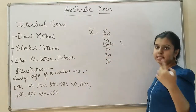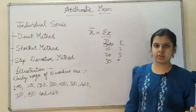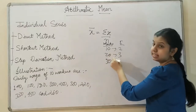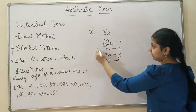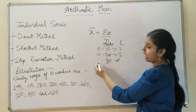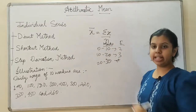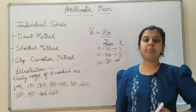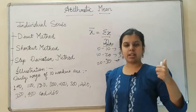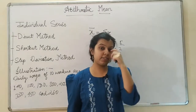In a discrete series, marks have a corresponding frequency — for example, how many students scored 10 marks gives you the frequency. If I give it a class interval like 0 to 10, 10 to 20, and 20 to 30, with a corresponding frequency series, it becomes a continuous series. So I hope individual series, discrete series, and continuous series is clear to you.